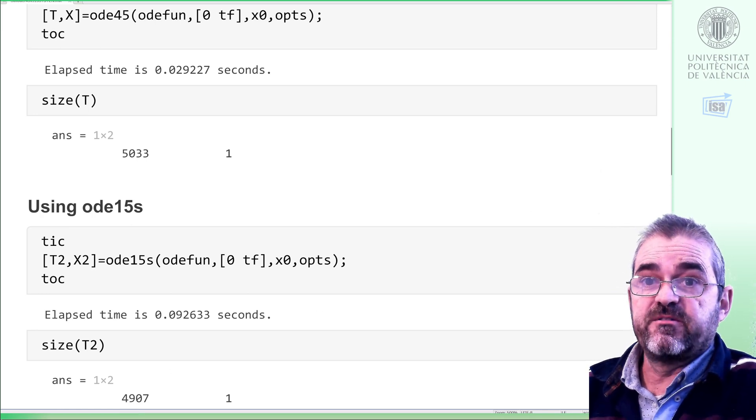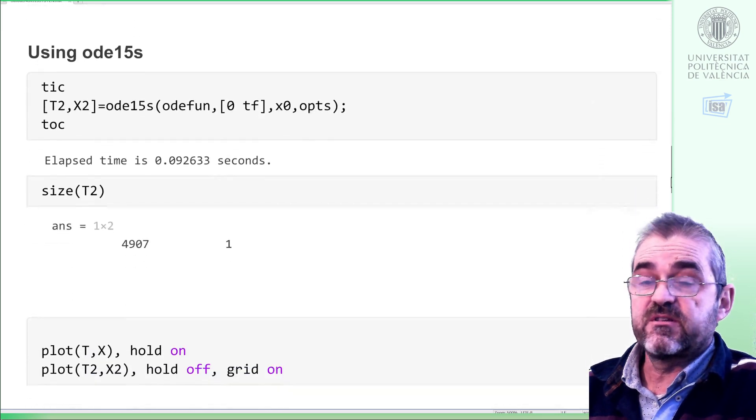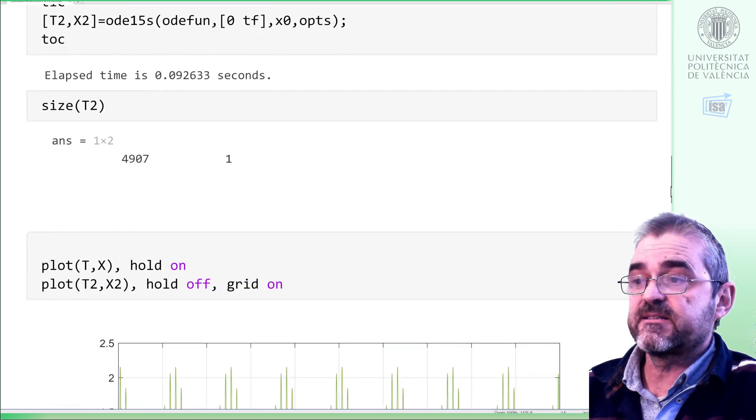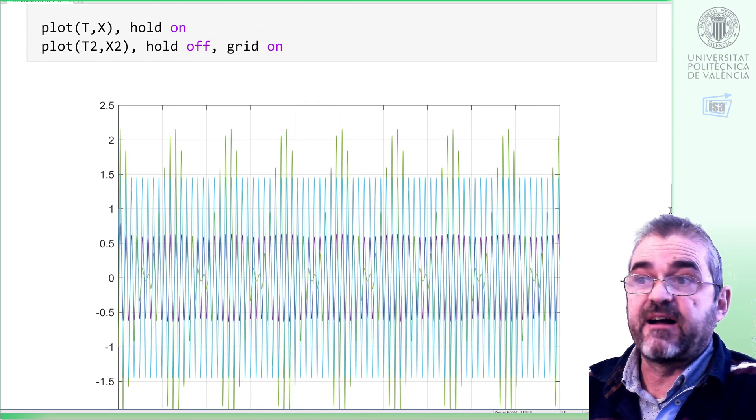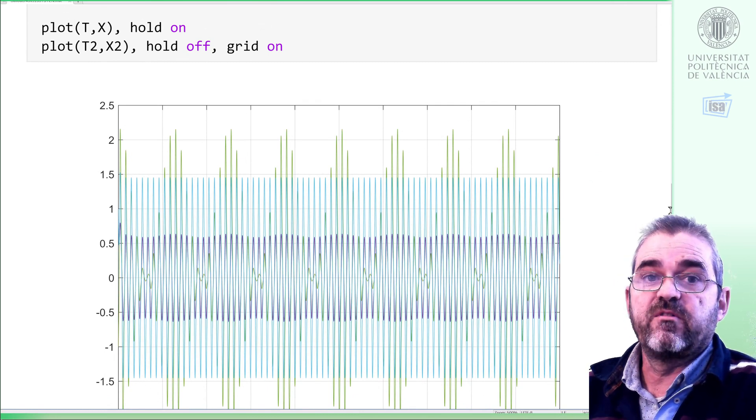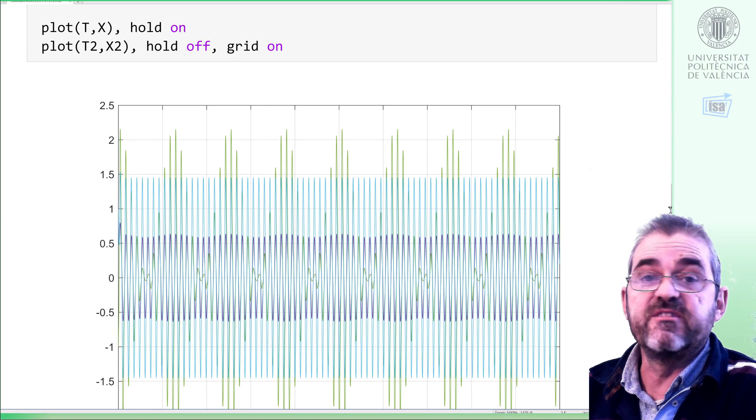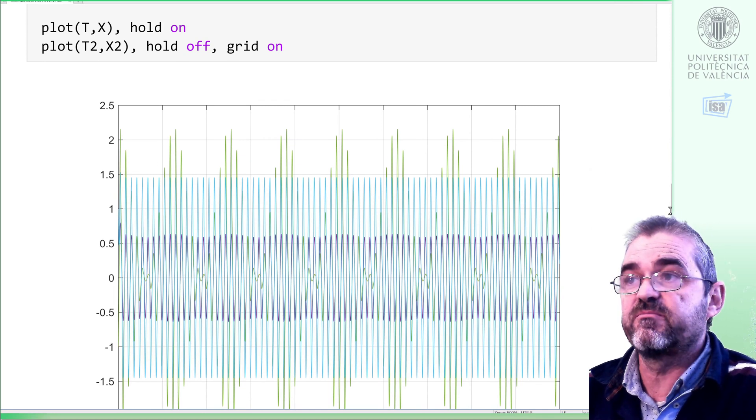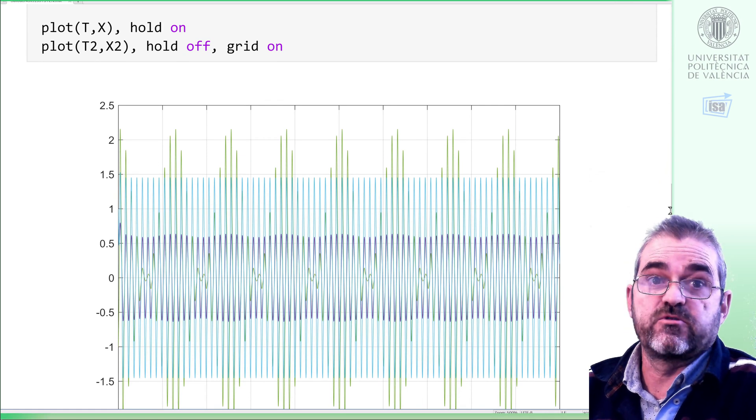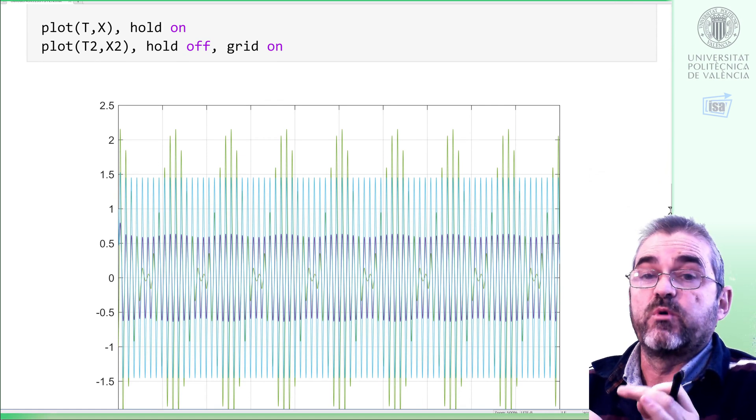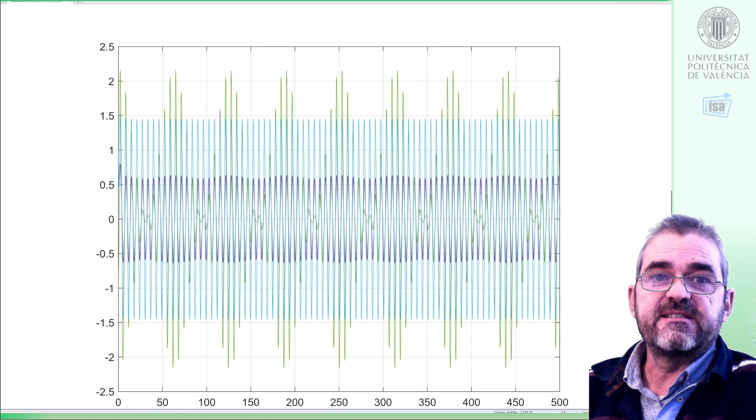Of course, the solvers computed a lot of points to meet the specified tolerance, and basically, the resulting solutions are identical. These are the three states of the process, and there is no visible difference between the solution by one solver and the solution by the other solver, because the tolerances were very small. So as I said, in this case, competition was won by ODE45.